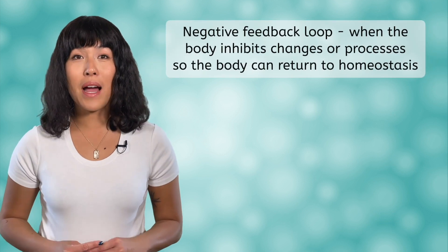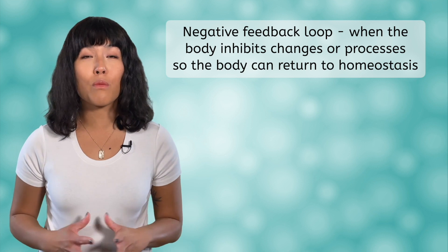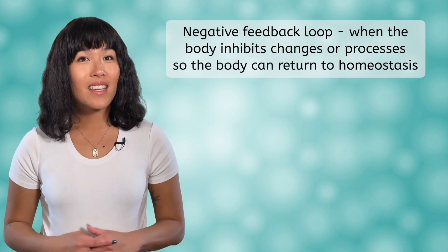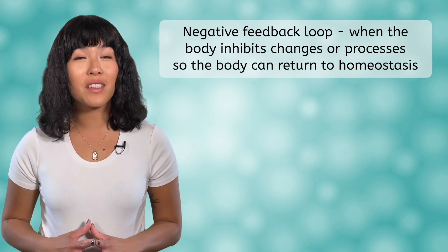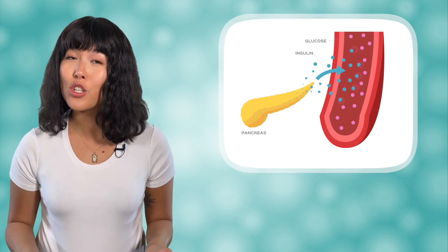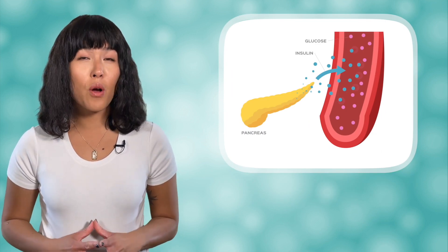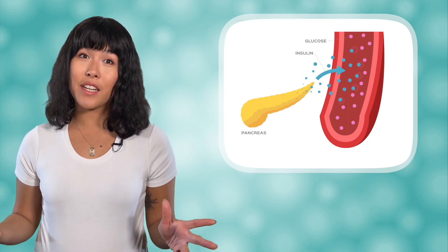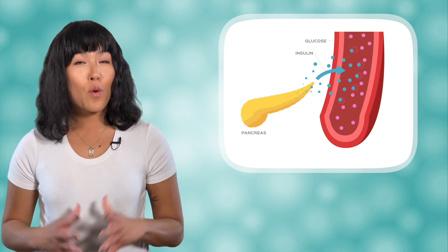In negative feedback loops, your body inhibits changes or processes so that the body can return to or maintain homeostasis. This happens after every meal. When you eat, especially something high in sugar, you end up with extra sugar in your blood. In response to this, your pancreas releases insulin, which is a hormone that works to lower your blood sugar. Another example of a negative feedback loop is sweating. When your body temperature rises, like during a workout, your sweat glands activate and release sweat in an attempt to cool your body down.